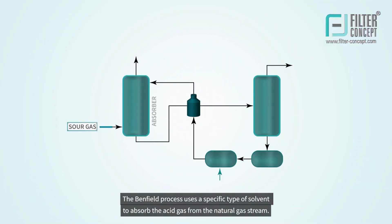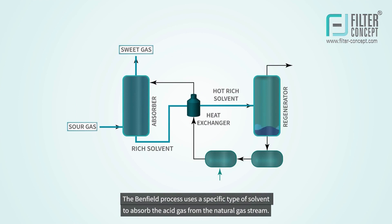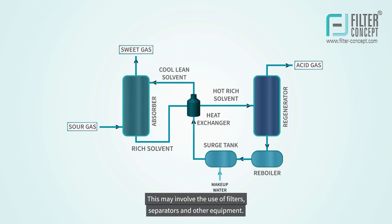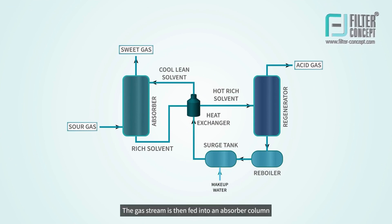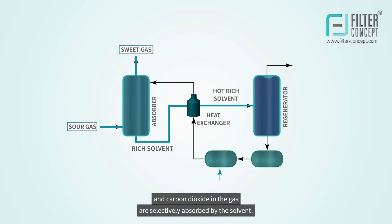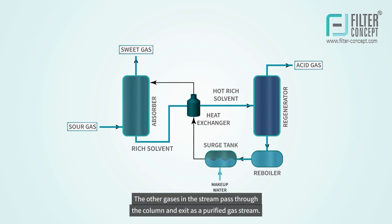The Benfield process uses a specific type of solvent to absorb the acid gas from the natural gas stream. The natural gas stream is first pre-treated to remove any solid or liquid contaminants that may damage the equipment downstream. This may involve the use of filters, separators, and other equipment. The gas stream is then fed into an absorber column, where it comes into contact with solvent. Hydrogen sulfide and carbon dioxide in the gas are selectively absorbed by the solvent, while the other gases pass through and exit as a purified gas stream.